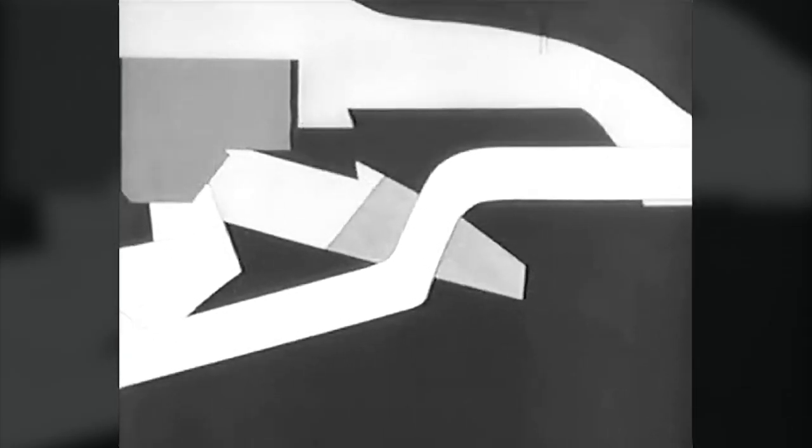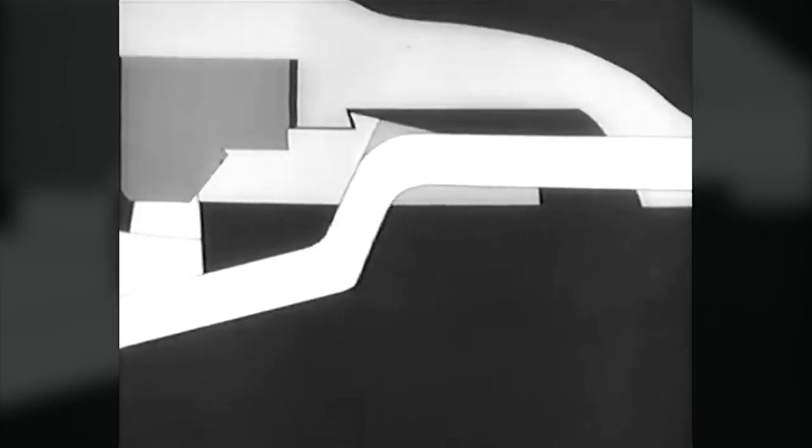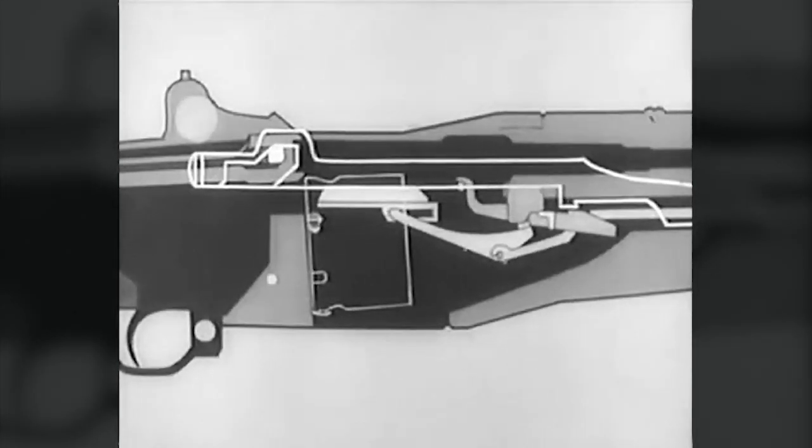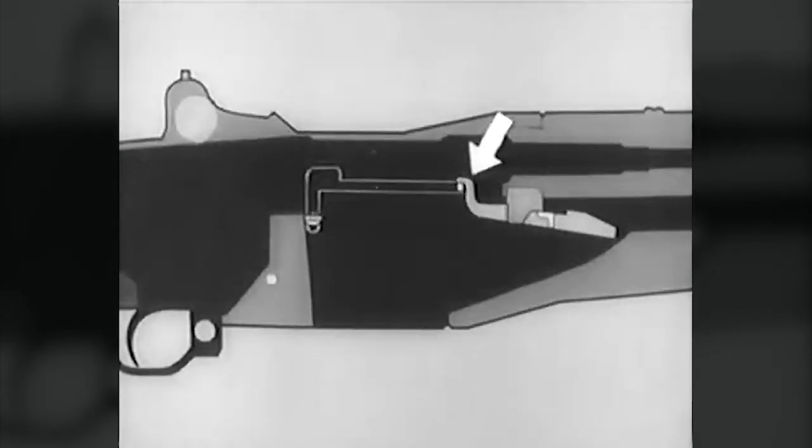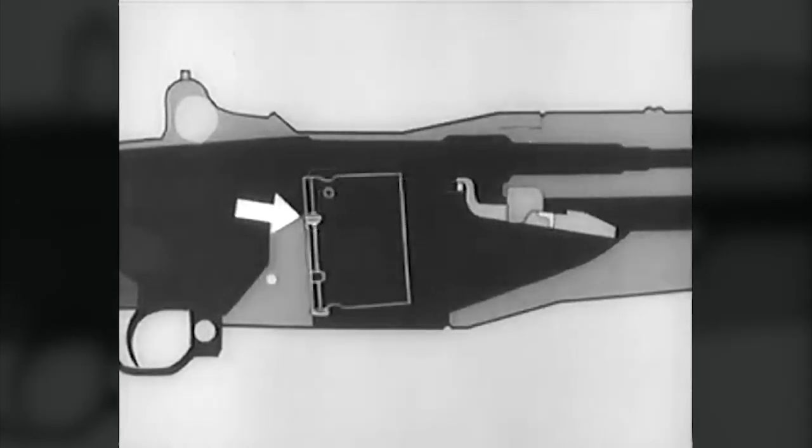Here's how it's done. Notice the curve part of the follower rod. It cams the operating rod catch up. And the catch holds the operating rod back. At the same time, the rear arm of the rod catch pivots, forcing this stud of the clip latch down. The clip latch spring is compressed and the latch disengages from the notch in the clip. The clip ejector forces the clip up and out of the receiver.